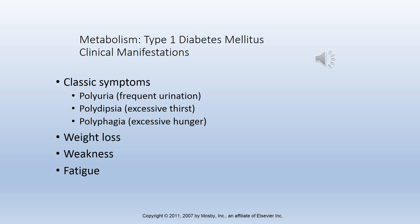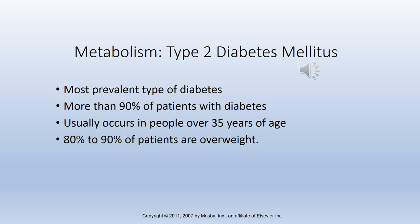Clinical manifestations of type 1 diabetes mellitus include polyuria (frequent urination), polydipsia (excessive thirst), and polyphagia (excessive hunger). Patients drink, eat, and urinate excessively but gain no energy, resulting in weight loss, fatigue, and weakness. Type 2 diabetes affects approximately 90–95% of people with diabetes, occurring more commonly in those older than 30 and obese. Two main problems are insulin resistance and impaired insulin secretion. In type 2 diabetes, intracellular reactions to insulin are diminished, making insulin less effective at stimulating glucose uptake and regulating liver glucose release. The pancreas continues to produce some endogenous insulin, but it is insufficient or poorly utilized.